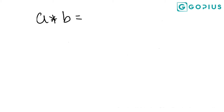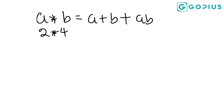So we have a★b defined as a★b = a+b+ab. The first thing we have to find is 2★4, which is very simple. We have 2★4, and comparing it to a★b, that means a has now been replaced as 2 and b has now been replaced as 4. So wherever we see a we are going to fix 2 on the right hand side, and wherever we see b we are going to fix 4.